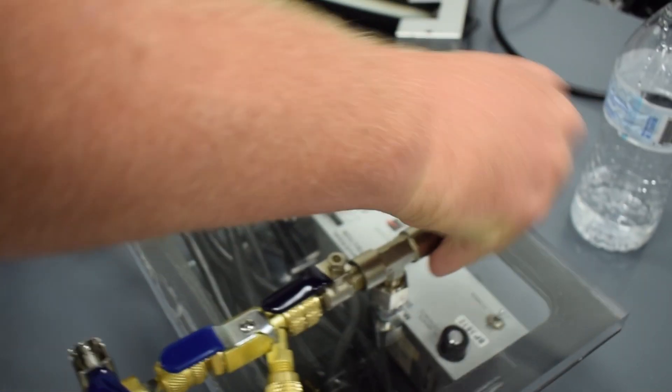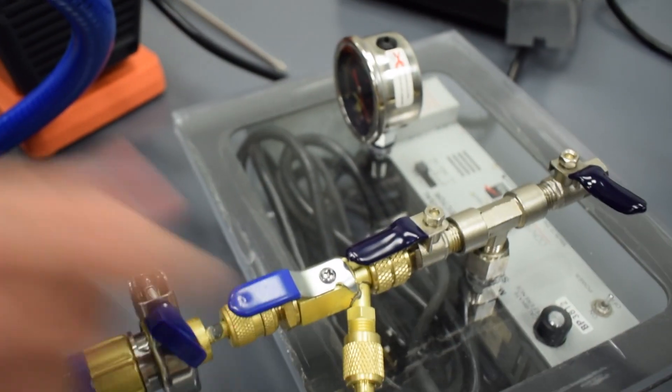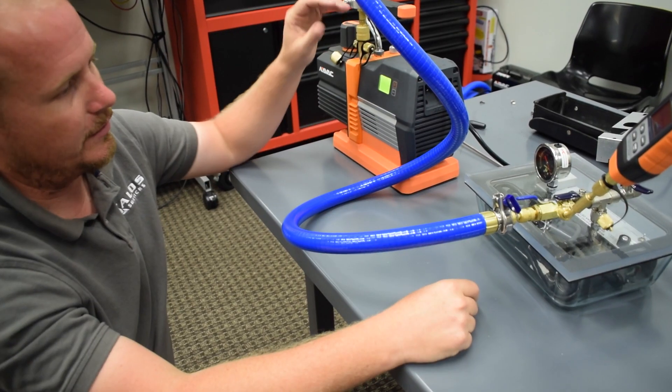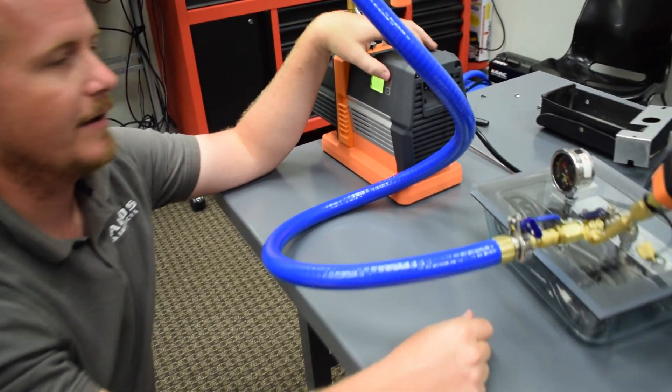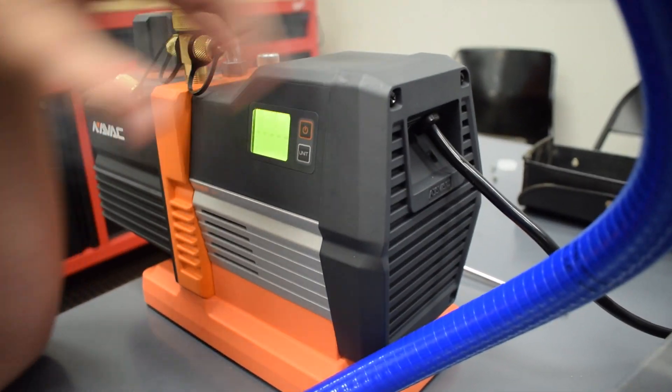All right, now we're gonna turn on our micron gauge here. So now I'm making sure, valve off there, open, open. This has no core in it, so we're open there. We're gonna go ahead and turn on the vacuum pump, which with this one you hit it twice and you kind of long hold the second time. Here you can see we're dropping. Two micron gauges are pretty close. This one's gonna lag a little bit from this one.